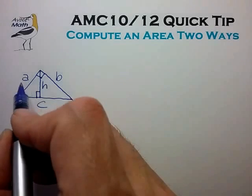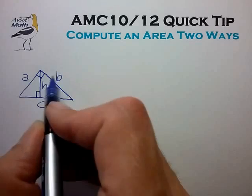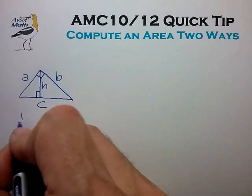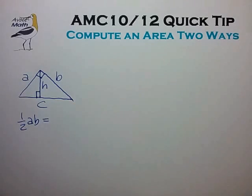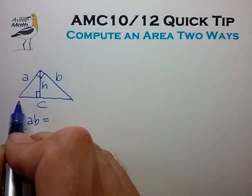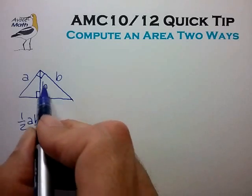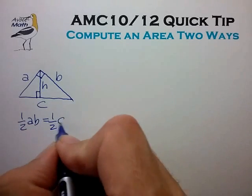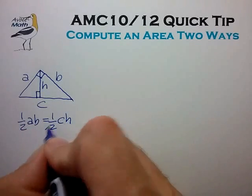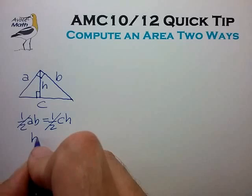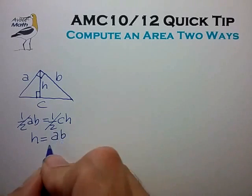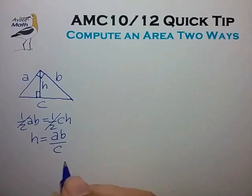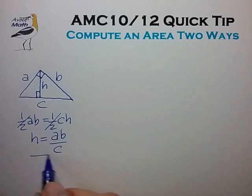In one way, we'll take one half of the legs A times B. In the second way, we'll take one half C times H. Canceling and rearranging the terms, we quickly find that the altitude is given by AB over C. A very simple and useful result and one that's probably worth remembering.